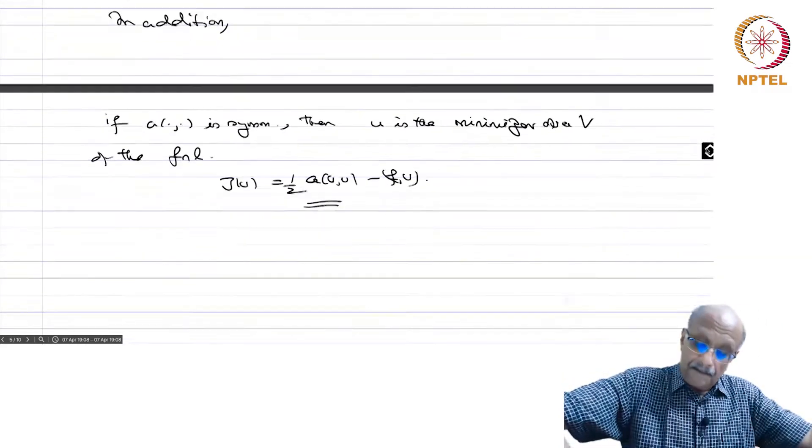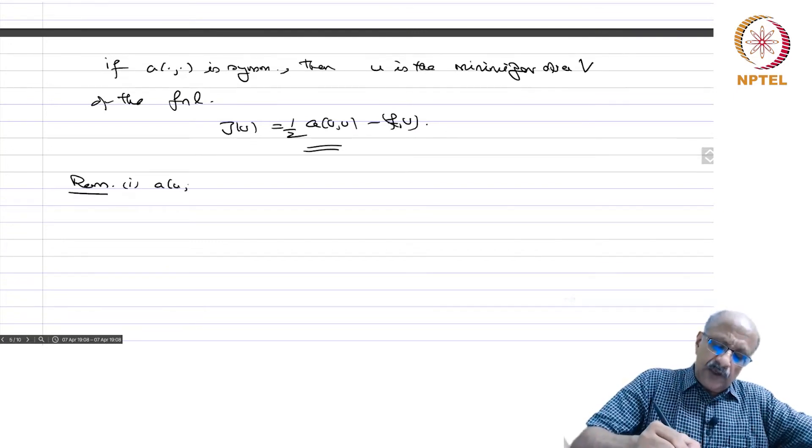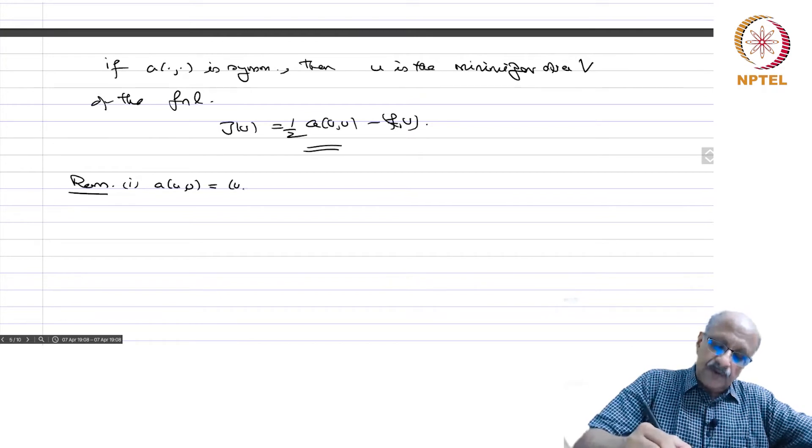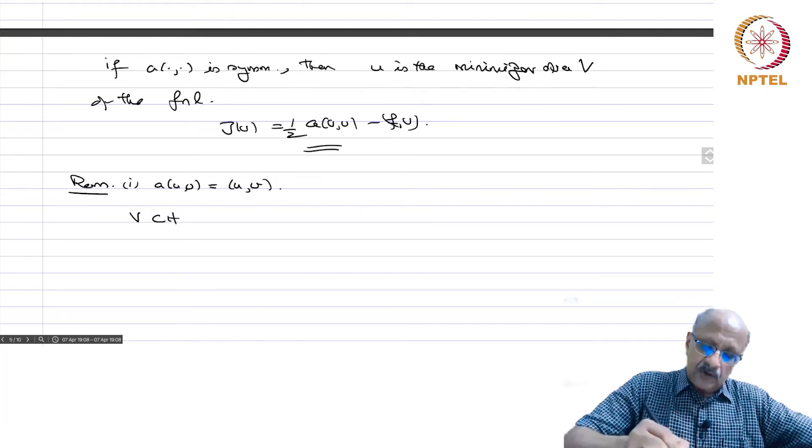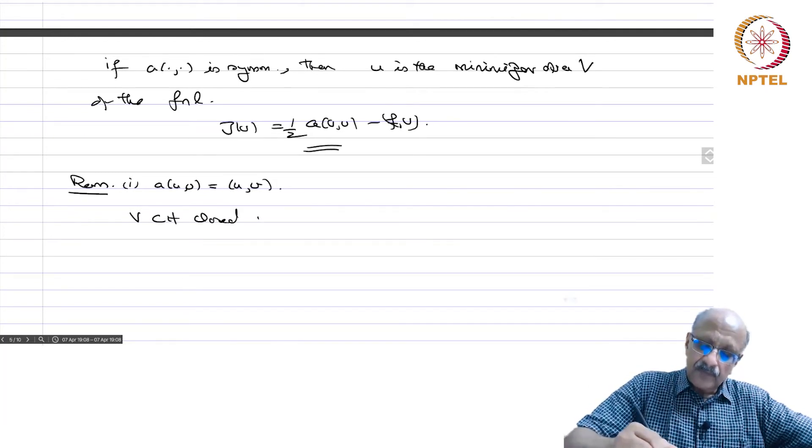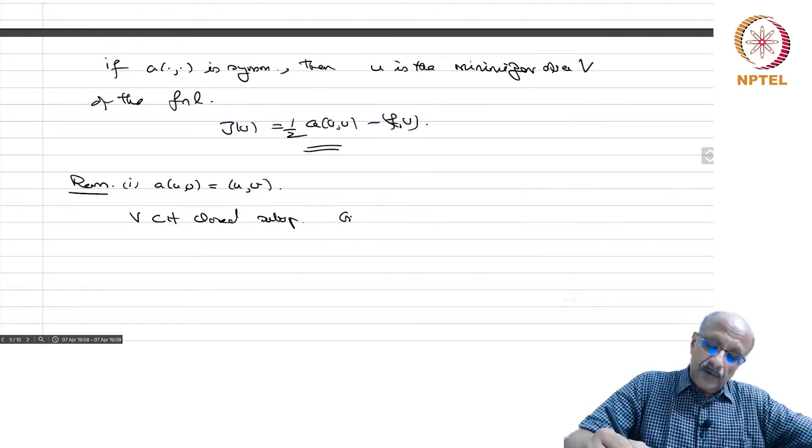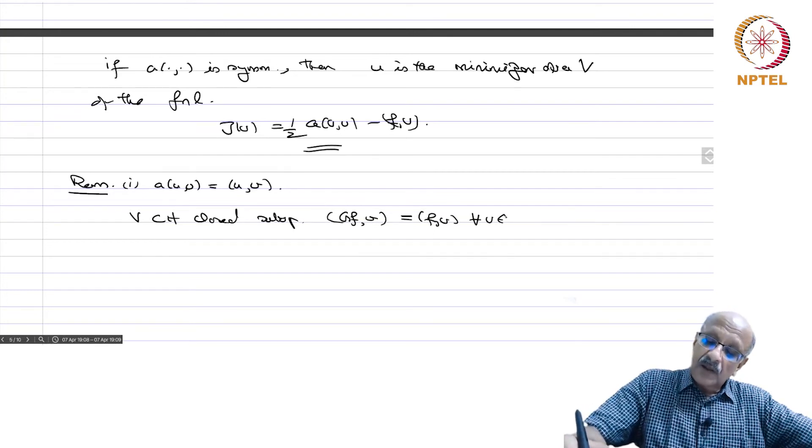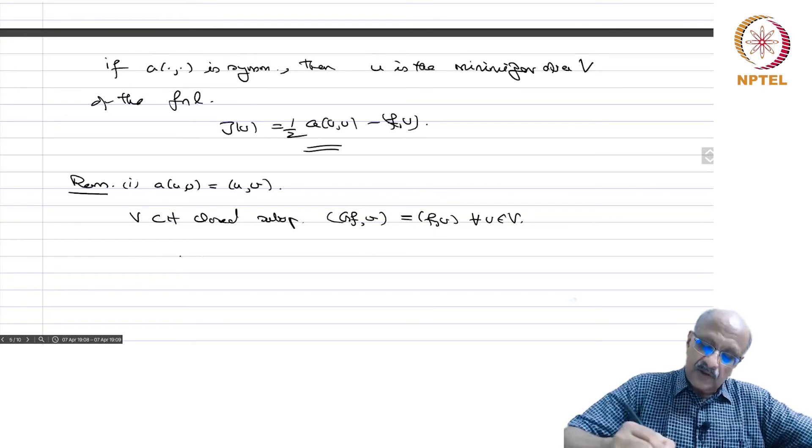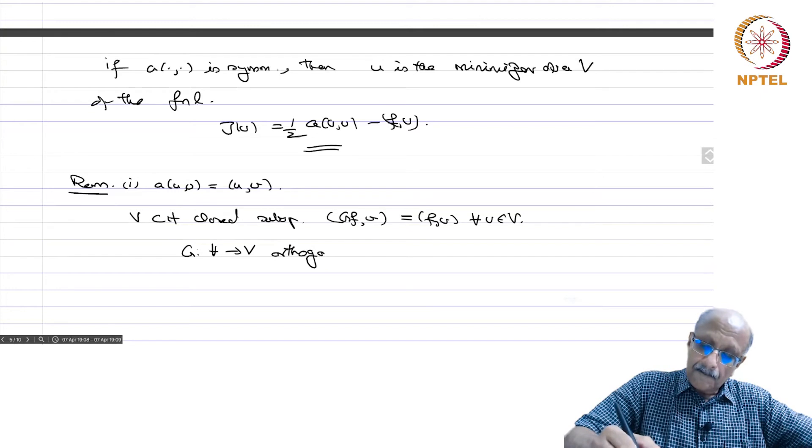Remark 1: You take A(u,v) as the inner product itself. If you have V contained in H closed subspace, then g(f)·v equals F(v) for every v in V. This g from H to V is the orthogonal projection.